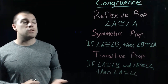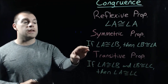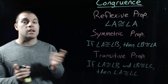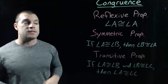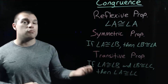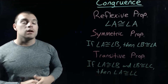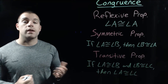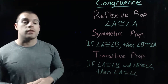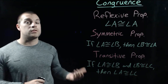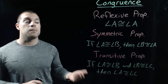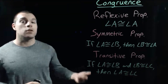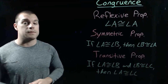For the symmetric property, if angle A is congruent to angle B, then we can flip that statement around — angle B is congruent to angle A. And for the transitive property, we've got three different angles: if angle A is congruent to angle B, and angle B is congruent to angle C, then angle A has to be congruent to angle C.